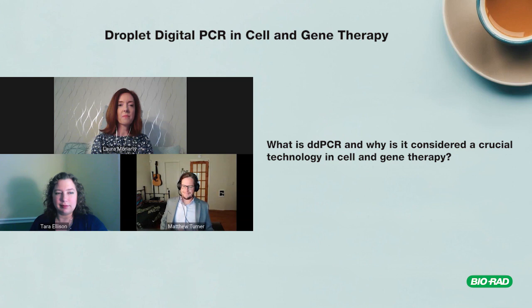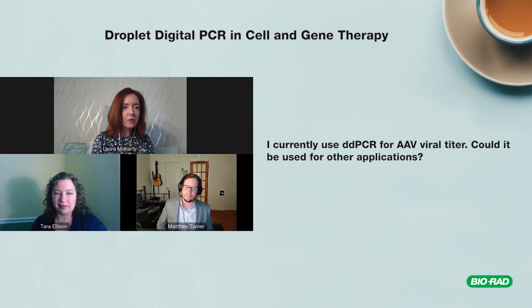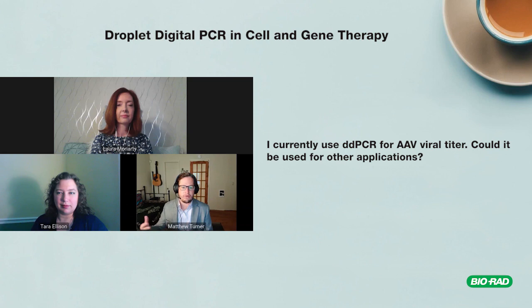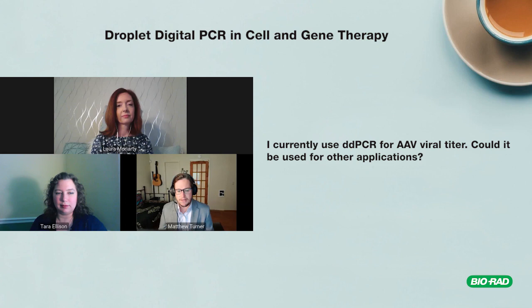I currently use ddPCR for AAV viral titer — can it be used for other applications? AAV stands for adeno-associated virus. It's commonly used for delivering a gene — whether a gene replacement or any type of deliverable — to a cell, making it what we consider a gene therapy. AAV titering means quantification: actually counting the number of AAV particles.